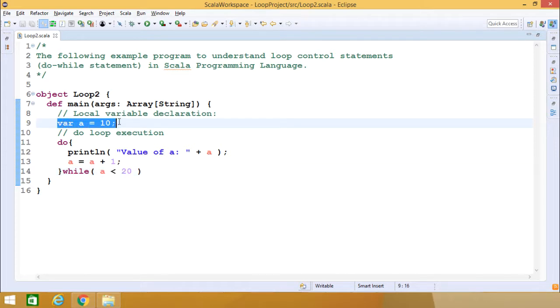Here this var a is equal to 10. A is of type integer and it is having the initial value of 10. At first the 10 will get printed, then a will become 11 in this particular statement.